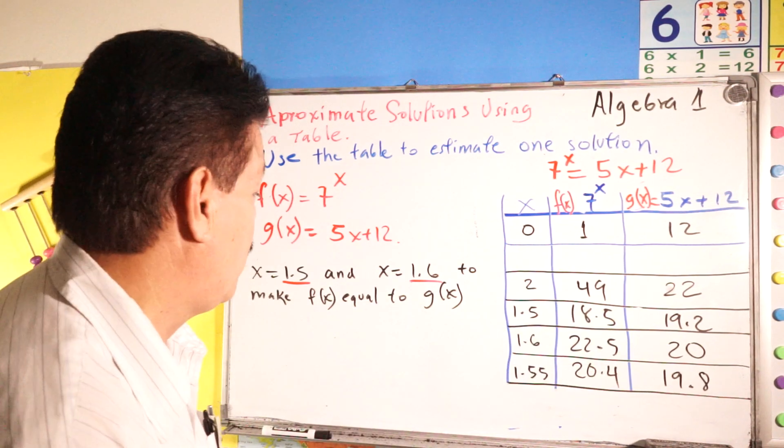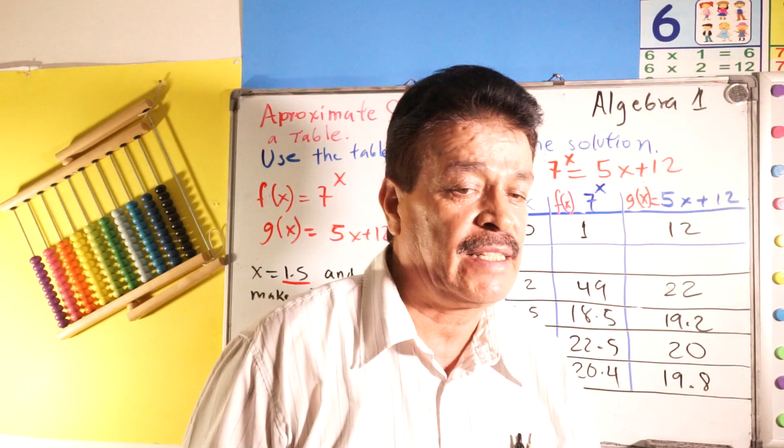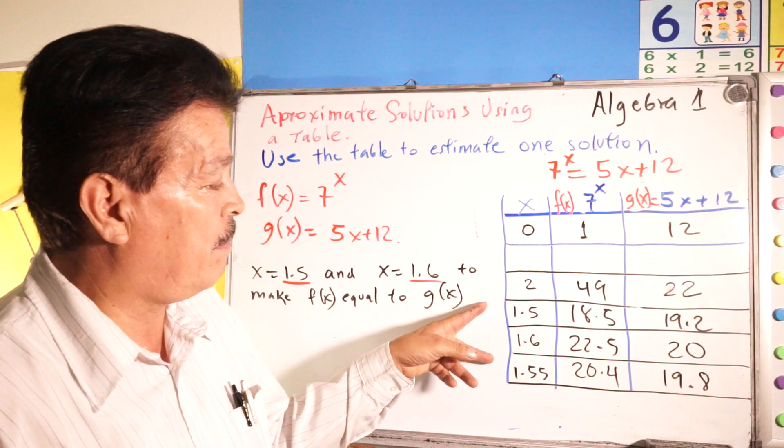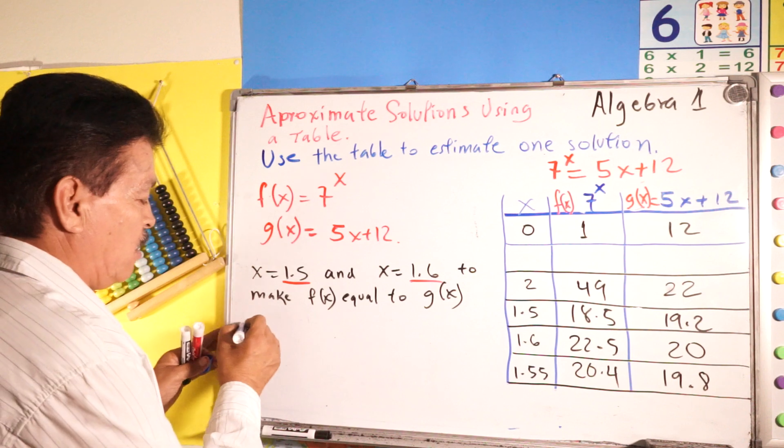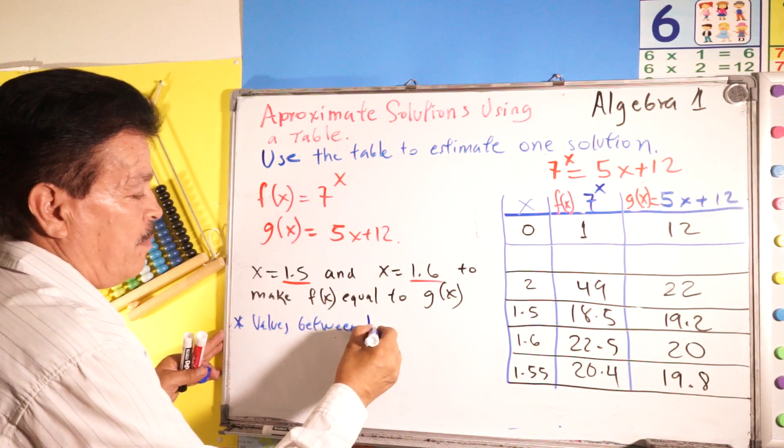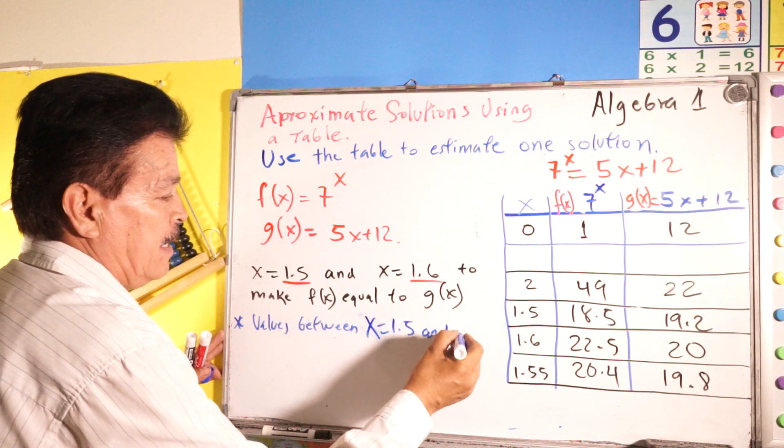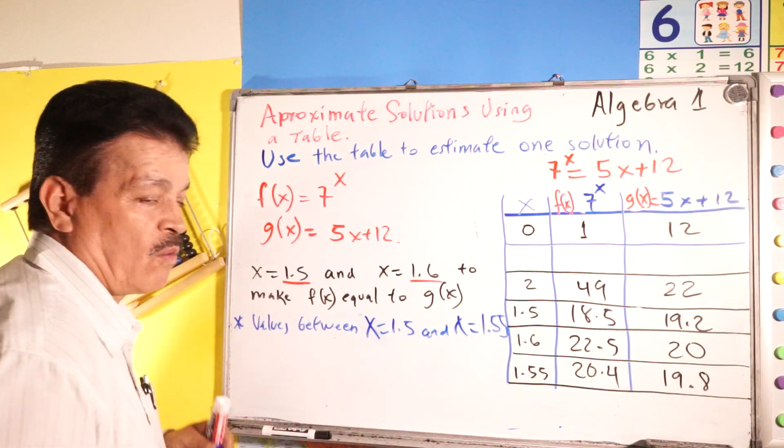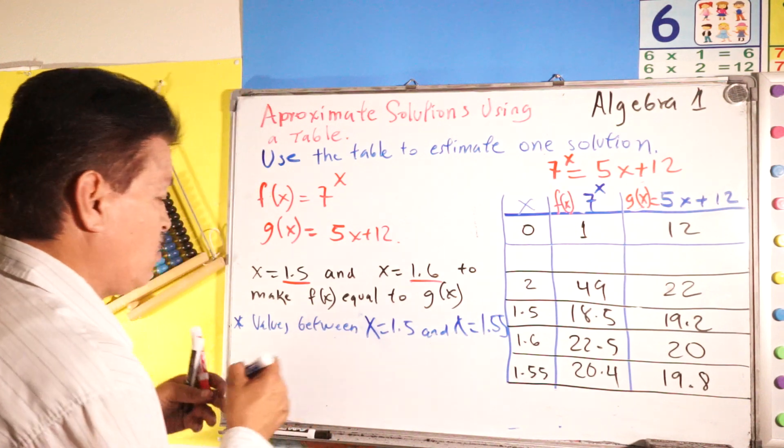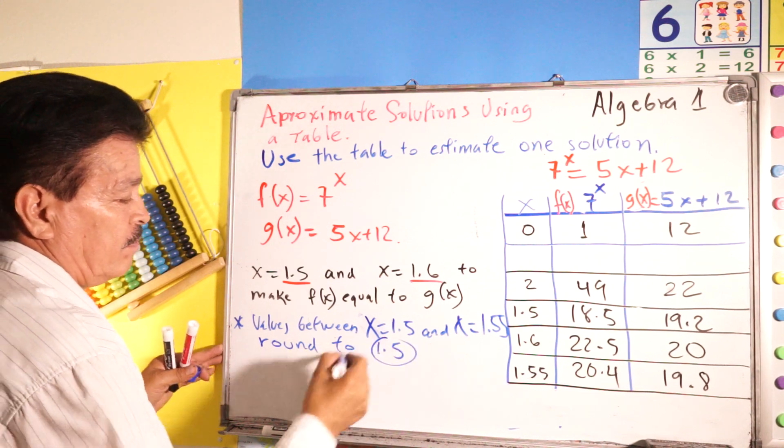In the last row, when X is equals 1.55, F X is greater than G X, see? Right here, the number? Then we have the values between 1.5 and 1.6. Values between X equals 1.5 and X equals 1.55, round to 1.5.